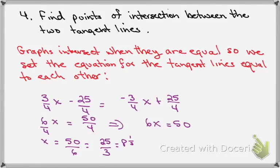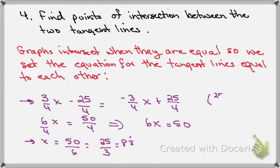The next question asks us to find the points of intersection between the two tangent lines. Graphs intersect when they are equal, so we set the two tangent line equations equal to each other: 3/4 x minus 25/4 equals minus 3/4 x plus 25/4. Solving, we get x equals 25/3. If you plug that back into either tangent line, you'll get y equals 0.